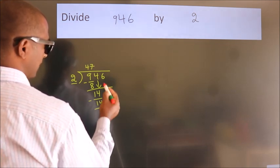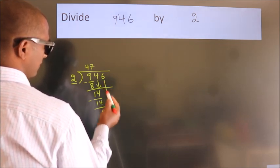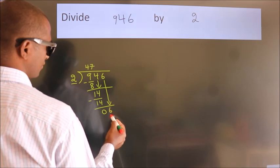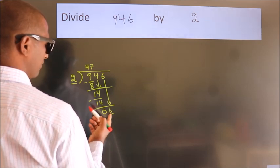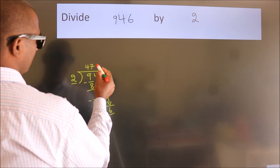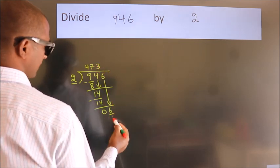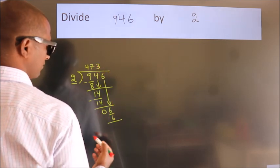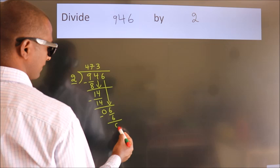After this, bring down the beside number. So 6 down, so 6. When do we get 6? In 2 table, 2 3s 6. Now we subtract. We get 0.